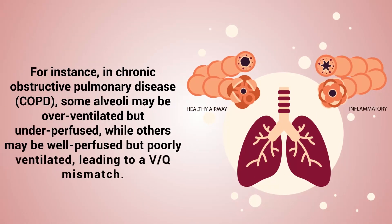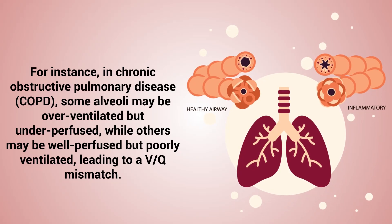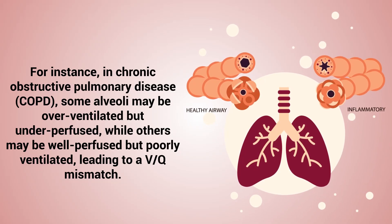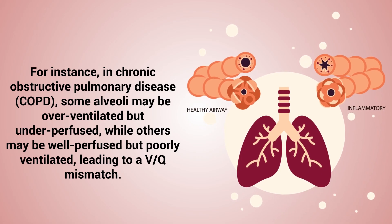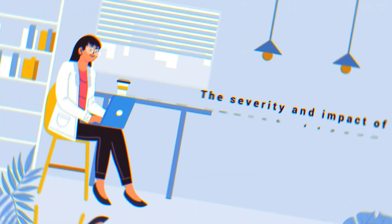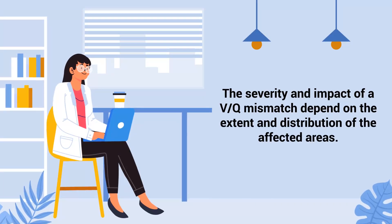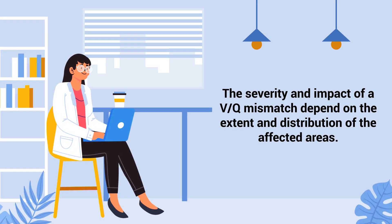For instance, in chronic obstructive pulmonary disease, some alveoli may be overventilated but underperfused, while others may be well perfused but poorly ventilated, leading to a VQ mismatch. The severity and impact of the VQ mismatch depend on the extent and distribution of the affected areas.